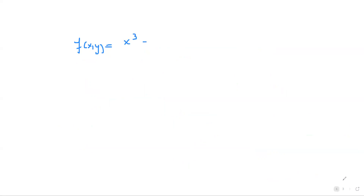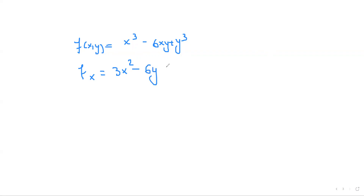Our function is f(x, y) equals x cubed minus 6xy plus y cubed. As we said, let's find the first-order partial derivatives. The derivative with respect to x is 3x² minus 6y, set equal to zero. The derivative with respect to y is 3y² minus 6x, set equal to zero. So we have a system of equations involving squares.